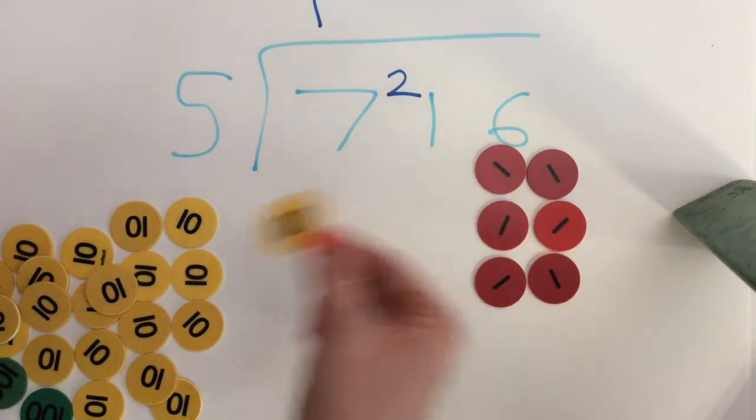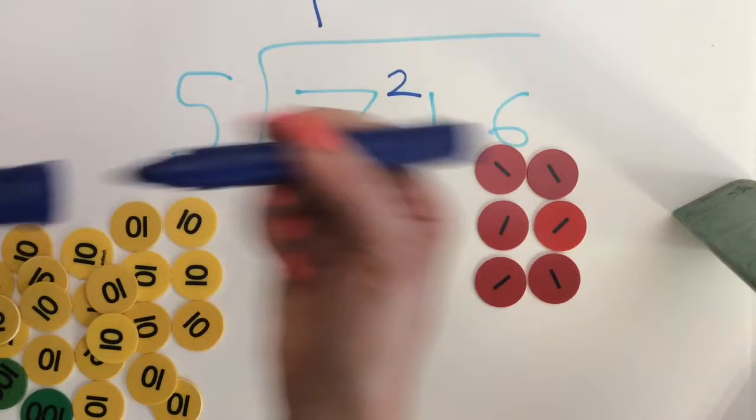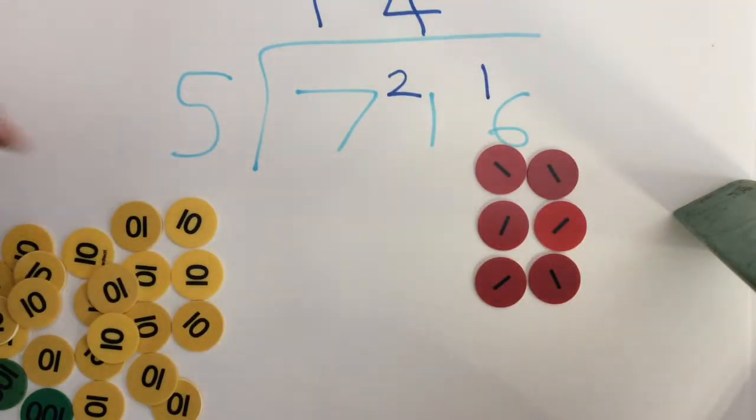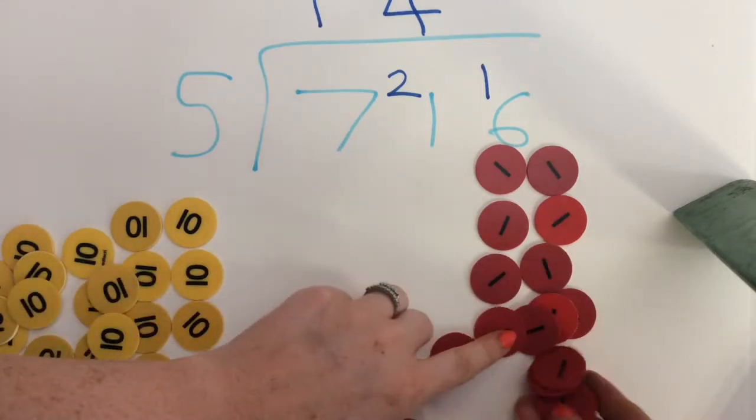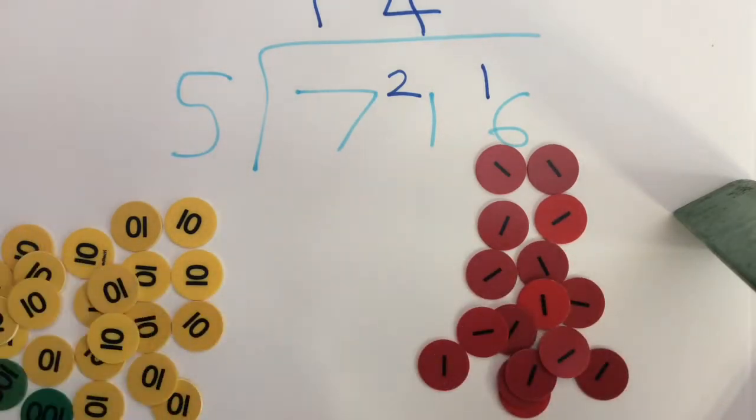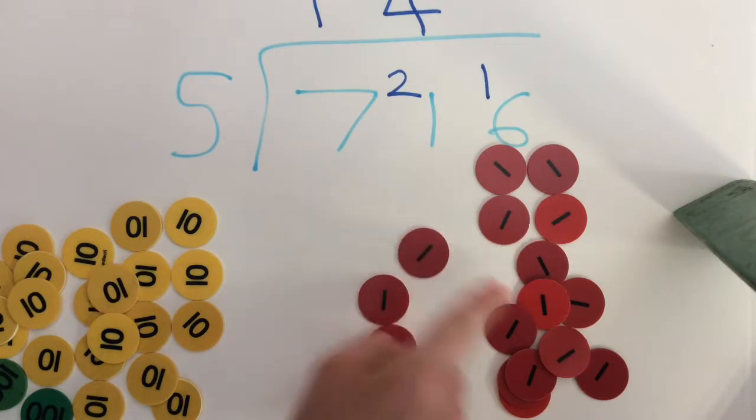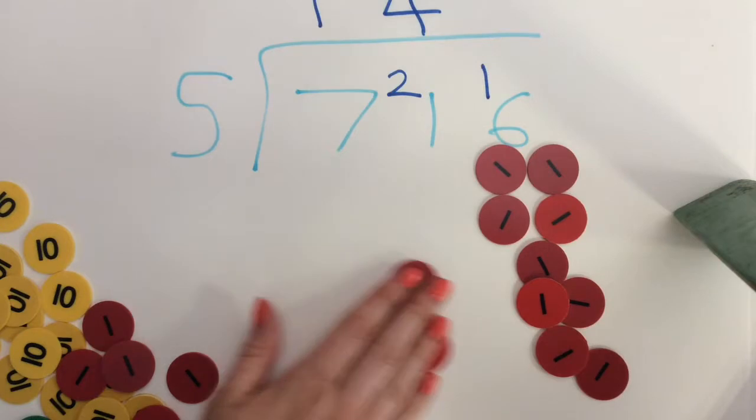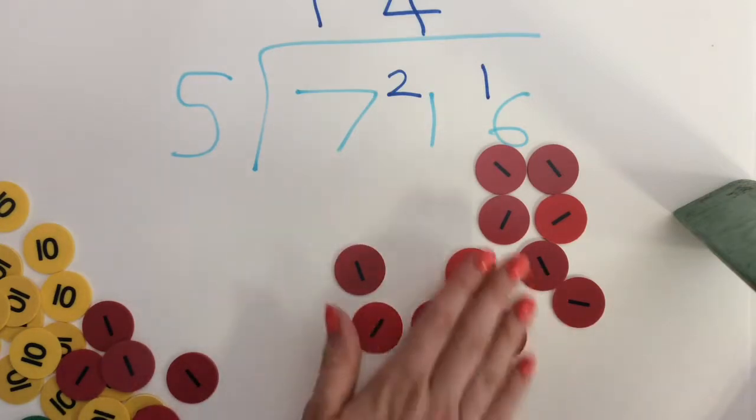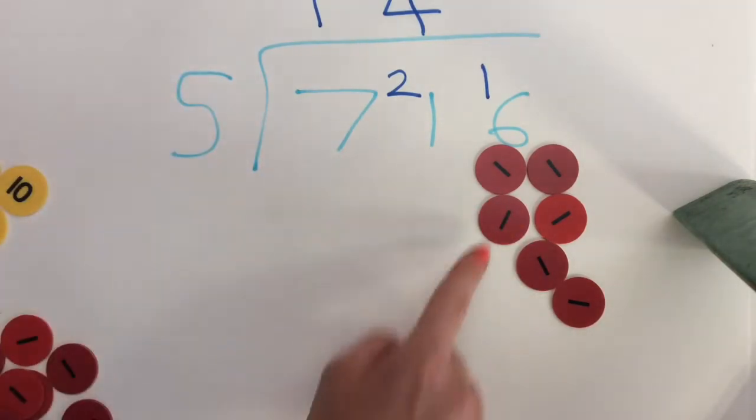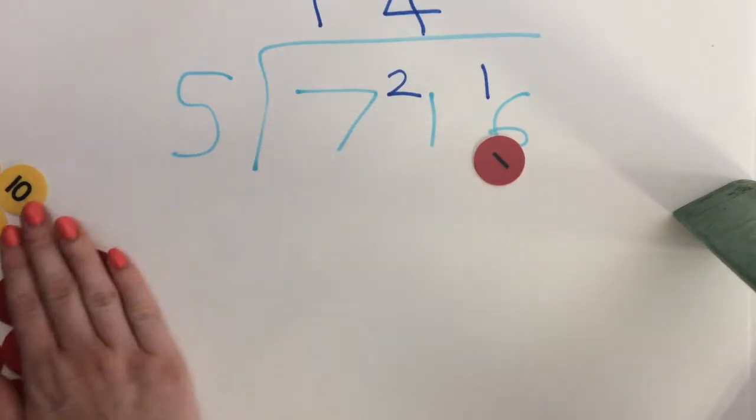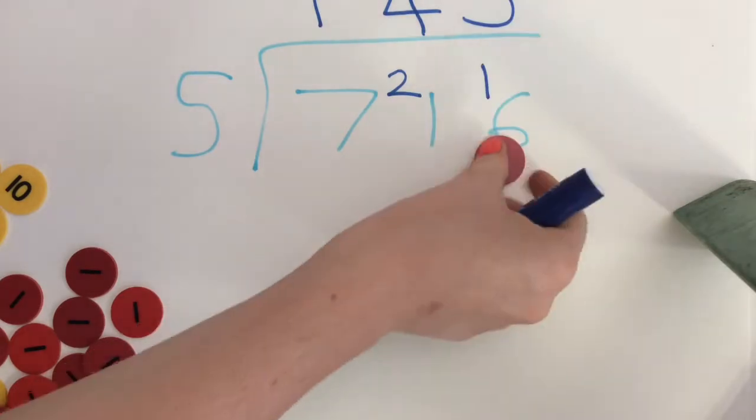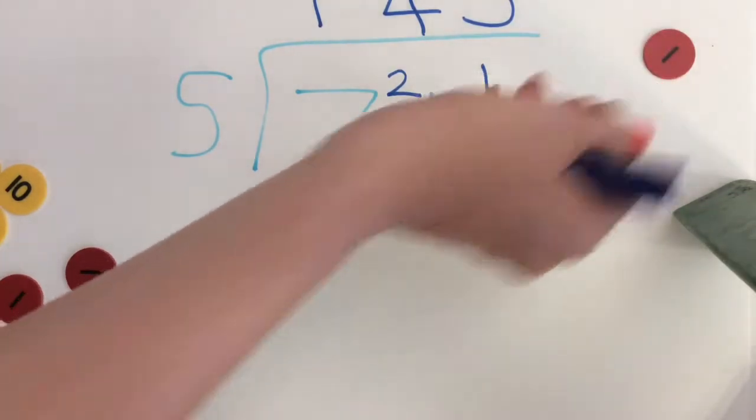One left over and here comes another exchange, so that one 10 which is left over, there's my four groups of five. One 10 left over is now going to be exchanged for 10 ones, giving me 16 ones all together. And again that's one group of five taken, and a second group of five taken, and finally one more group of five taken. So that's three lots of five out of 16, and you can see there's one little one left there and that's my remainder one.